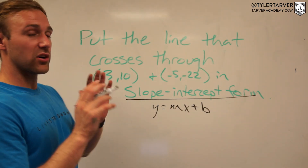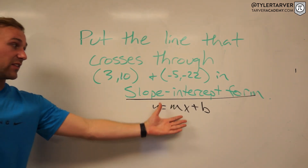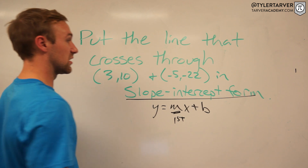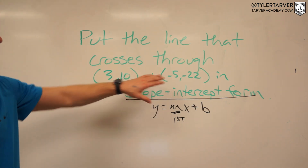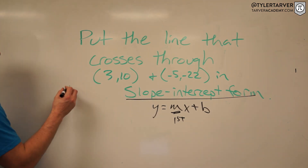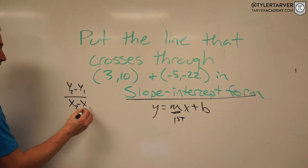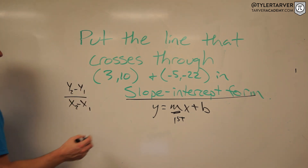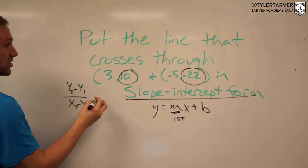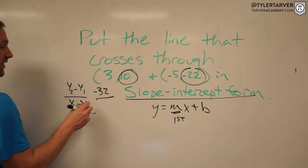There are a few steps to finding this and putting it in slope-intercept form. The first thing you need to find is your slope. To find the slope of two points, you do y2 minus y1 over x2 minus x1. That means we take our y's and subtract them: negative 22 minus 10.